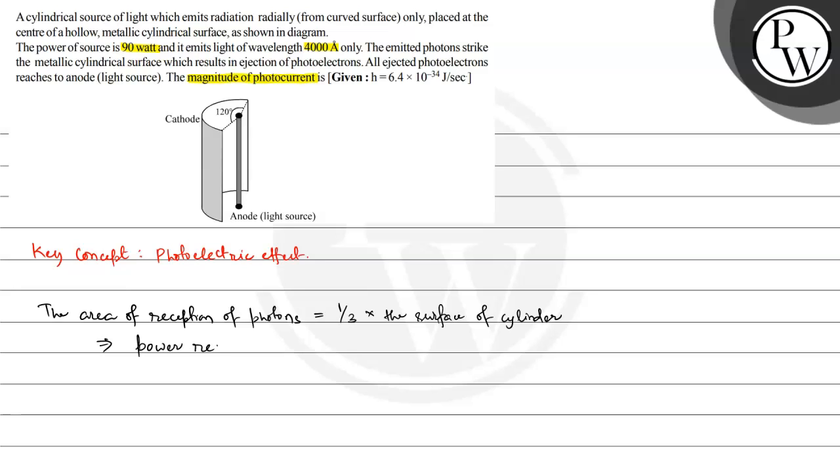power received is equal to 1 by 3 multiplied by power supplied. So power supplied is 90 watts, so this is 1 by 3 multiplied by 90 watts and this is equal to 30 watts. So this is the power that the metal surface gets.